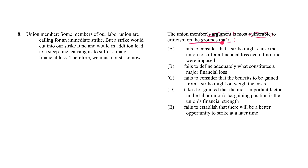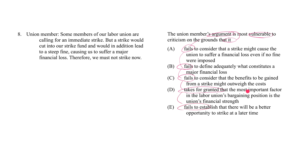On the grounds that — meaning because the argument failed to consider something, that's why the argument is weak. Or the argument failed to define something. Or C says it failed to consider this thing. D says the argument took for granted something else. And E says the argument failed to establish something. This is the level at which we're having to make our decision.